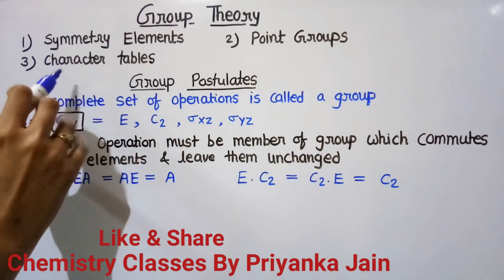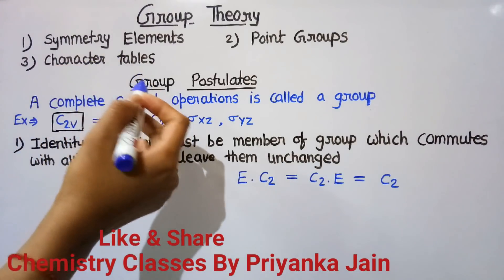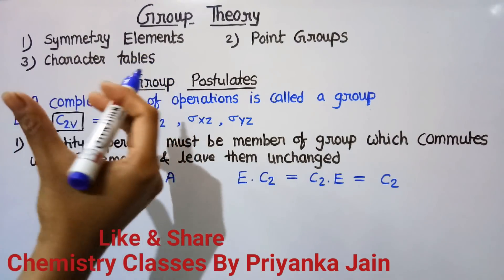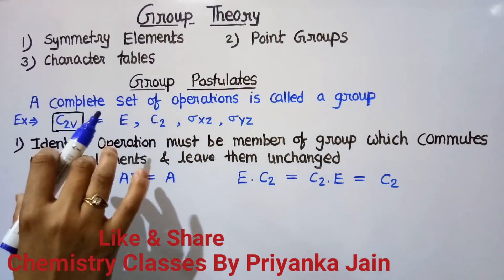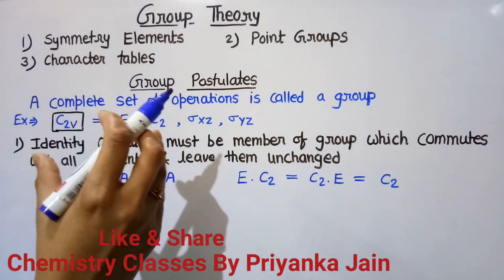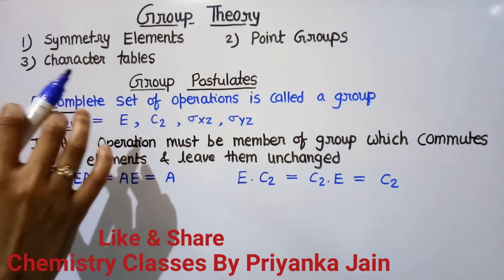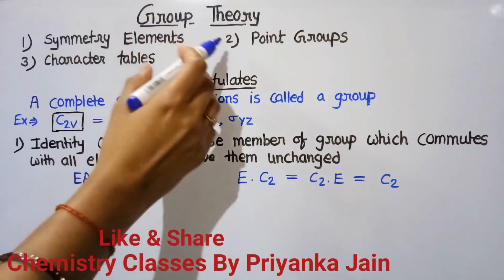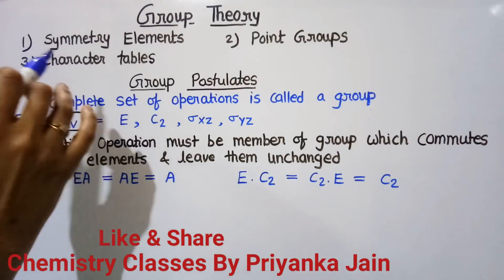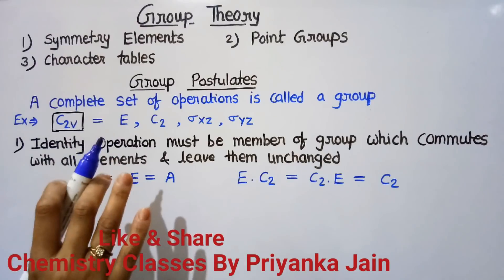A four-mark question is asked every year from the character table. The questions are basically very simple: they may ask about a missing character in the table, or they may give a missing Mulliken symbol and you have to identify it. The third important thing is they may ask about IR or Raman active modes, or about polarization. Here we will start with the group postulates and then we will start the character table.